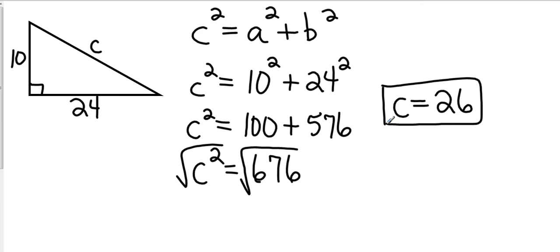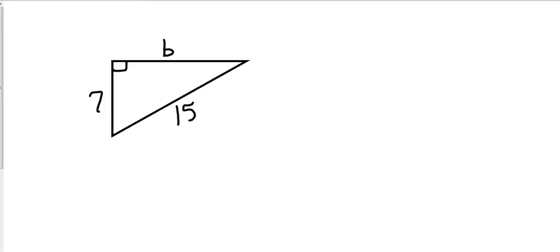Now the only variations are they may have them in different places. Okay, so let's take a look at another one. Okay, let's take a look at this example. This time it gave us the hypotenuse and also gave us one of the legs.